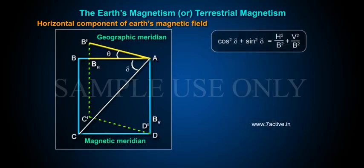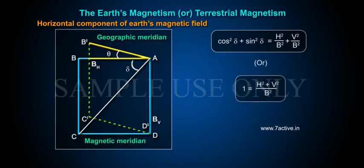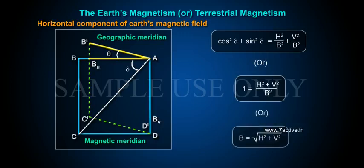From the identity cos²δ + sin²δ = 1, we get H²/B² + V²/B² = 1, which gives B = √(H² + V²).